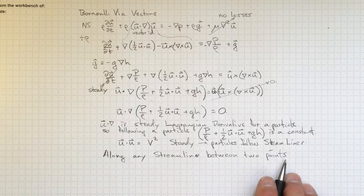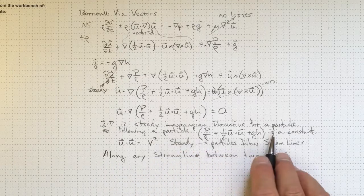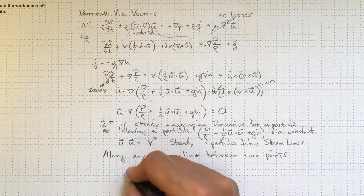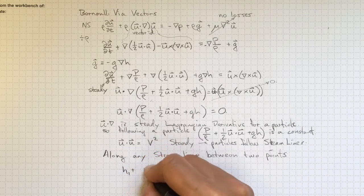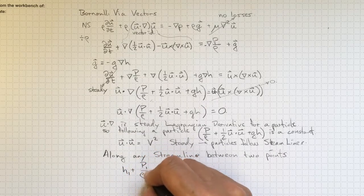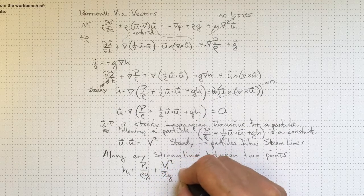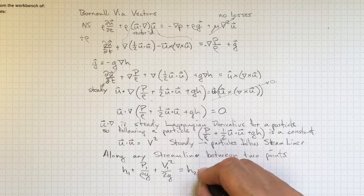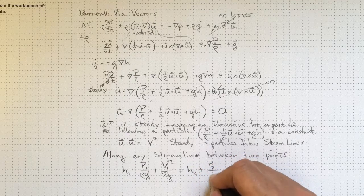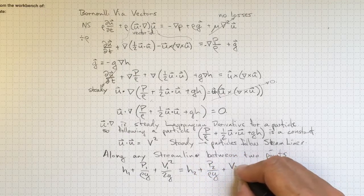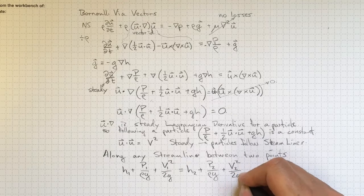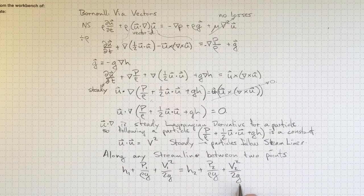Thus, along any streamline between two points, this quantity will be a constant. That means that h1 plus p1 over rho g, plus v1 squared over 2g, will be equal to h2 plus p2 over rho g, plus v2 squared over 2g. And that's our Bernoulli equation.